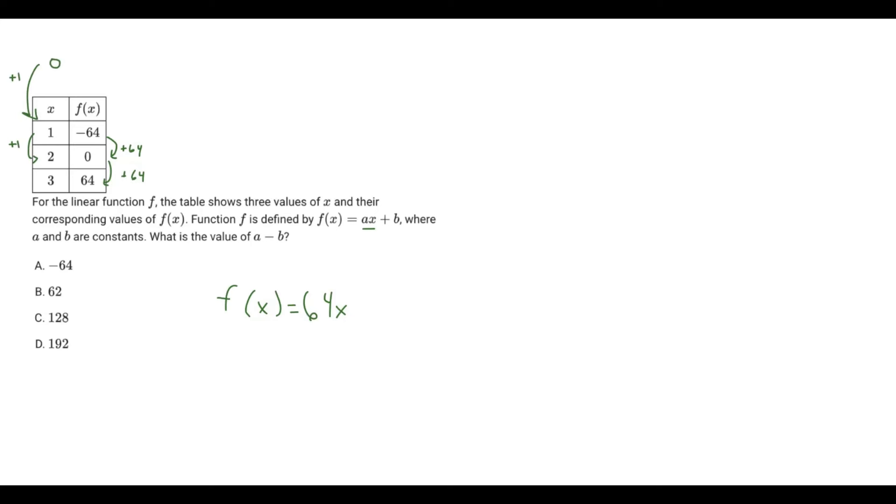We can just work backwards. Instead of adding 64, we can just subtract 64. So here minus 64, we'll get a value of negative 128. So our y-intercept would be negative 128. You can write this as plus negative 128, but it's the same thing.